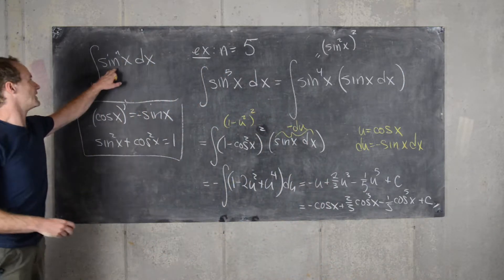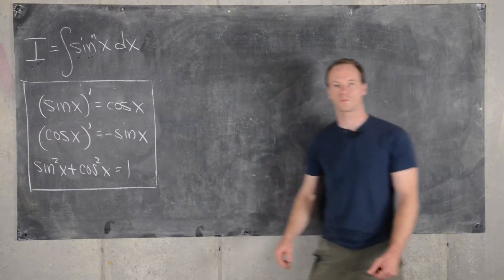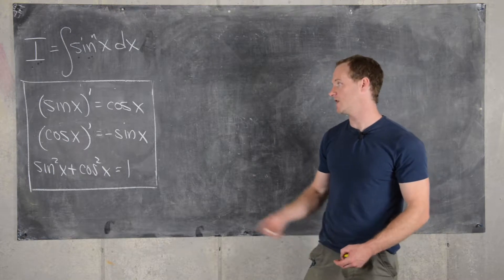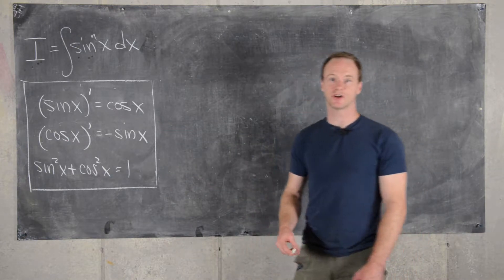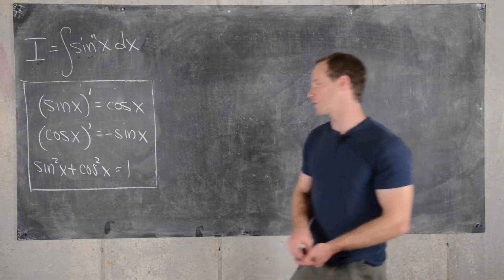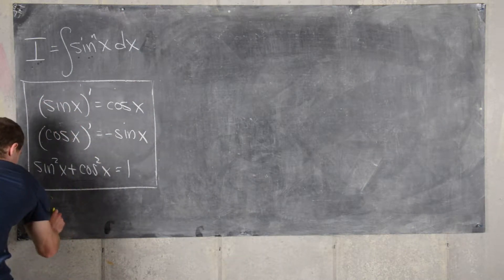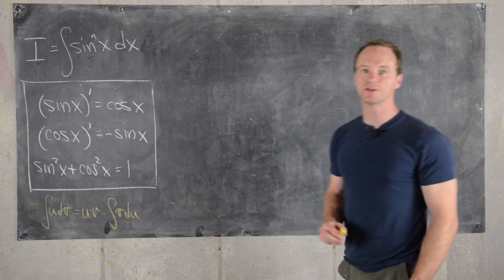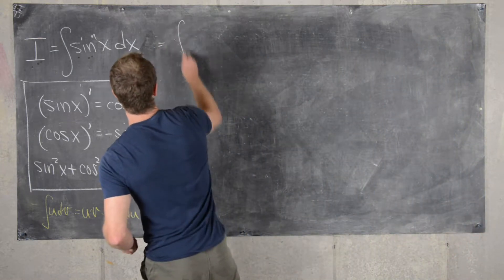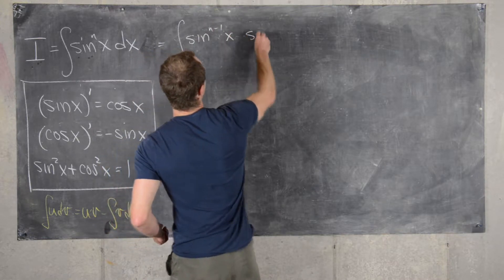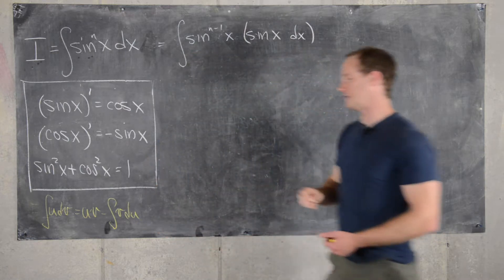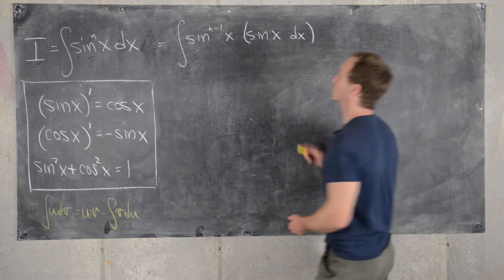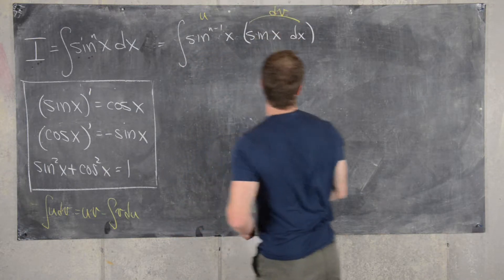Now we'll move on to deriving this identity in general. We have a reminder that the derivative of sine is cosine, the derivative of cosine is negative sine, and we'll also need the trig identity. We'll attack this by integration by parts. Recall the general integration by parts formula: the integral of u dv equals u times v minus the integral of v du. We'll start by pulling out one factor of sine x and grouping it with dx, which sets up the choice of u and dv to match the integration by parts formula.